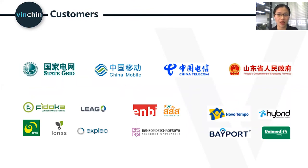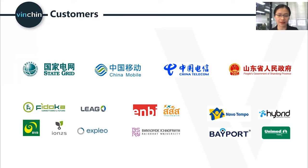Here are some of Vinchin's customers from different industries. Industry leaders include China State Grid with over 900,000 employees, China Mobile and China Telecom each with over 400,000 employees, and Shandong Province government with over 200,000 civil servants. International customers include Fedoka Telecommunication from Italy, a League energy group from Germany, BVB bus transportation group from Switzerland, an MB manufacturer from the USA with branch offices in Singapore and China, Nova Temple TV broadcast from Brazil, and an airport finance company from Mexico. All of these customers use Vinchin's backup solution to protect their critical data and guarantee their business continuity.